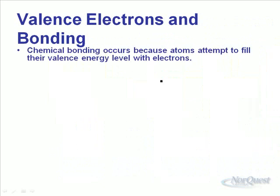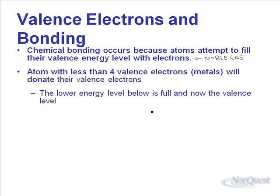Valence electrons are extremely important when we talk about chemical bonding. Chemical bonding occurs because atoms attempt to fill up their valence energy level — they try to become more like noble gases. Noble gases don't react with anything because their valence energy level is full. All other elements try to get a full valence energy level, thereby becoming like the nearest noble gas. Atoms with less than 4 valence electrons, which turns out to be our metals, find it easier to donate their valence electrons.